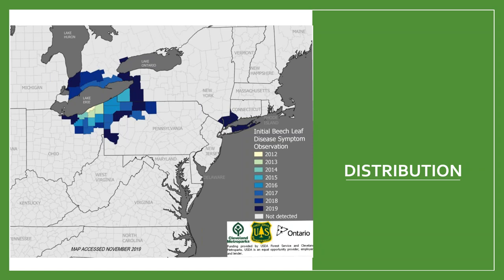Is it possible that beech leaf disease is actually found throughout Pennsylvania and New York and has just gone undetected? Or is it possible that this is a brand new infestation with some unidentified vector? These are all questions that still need to be answered.